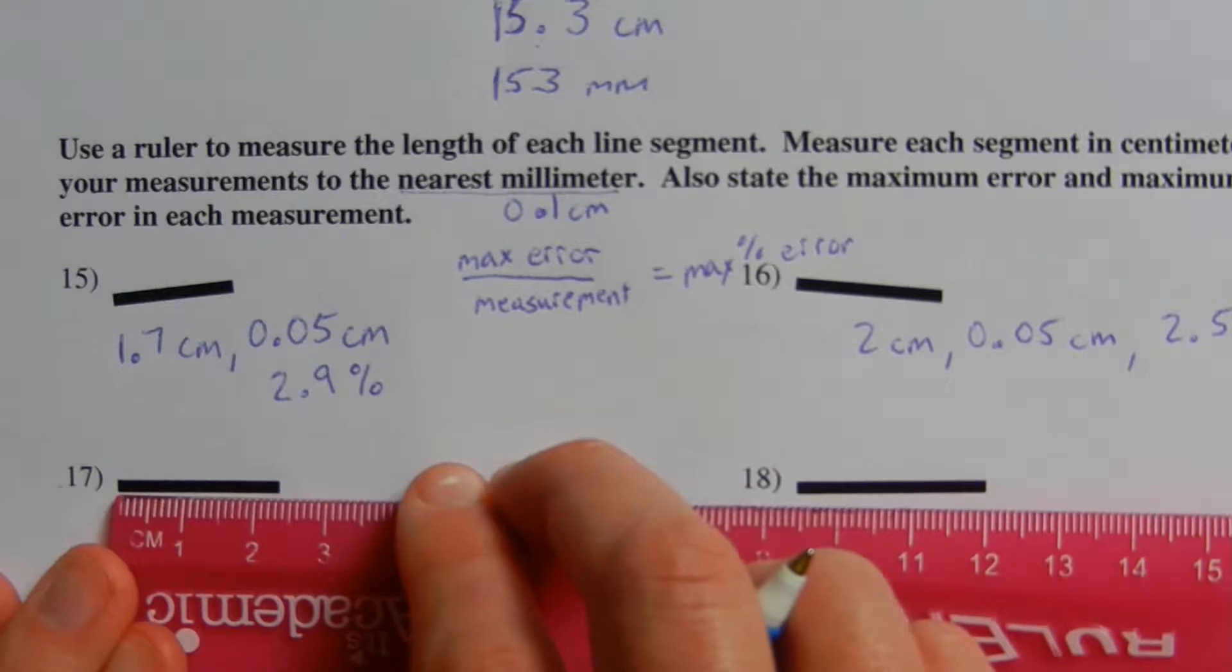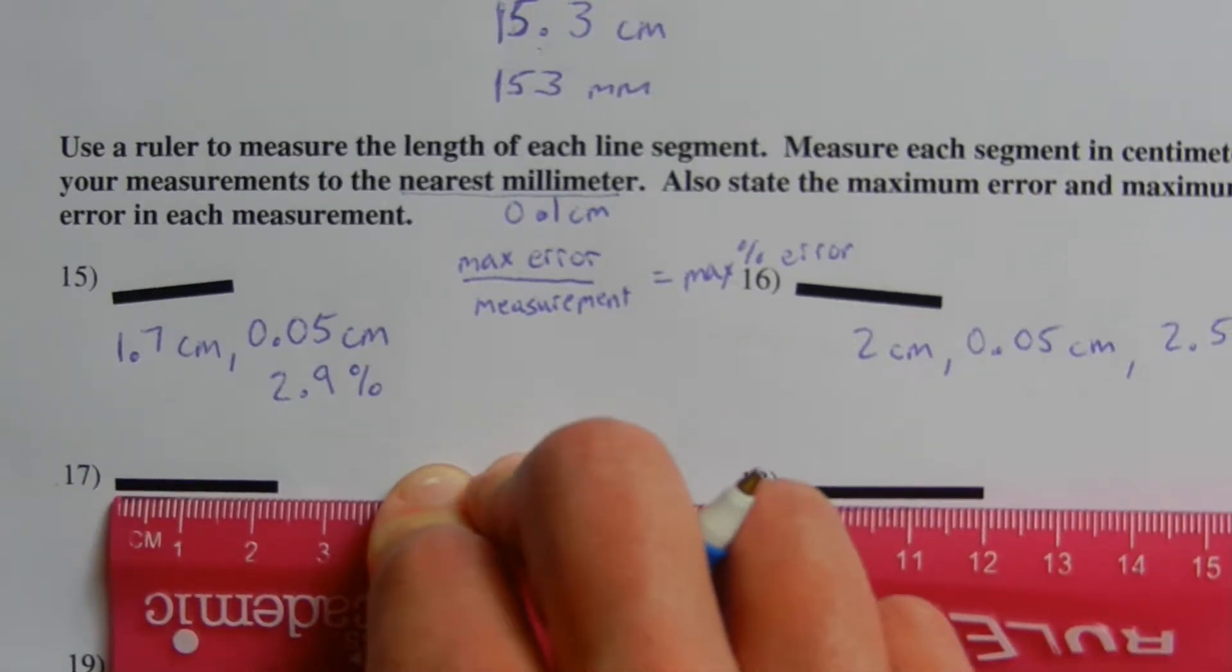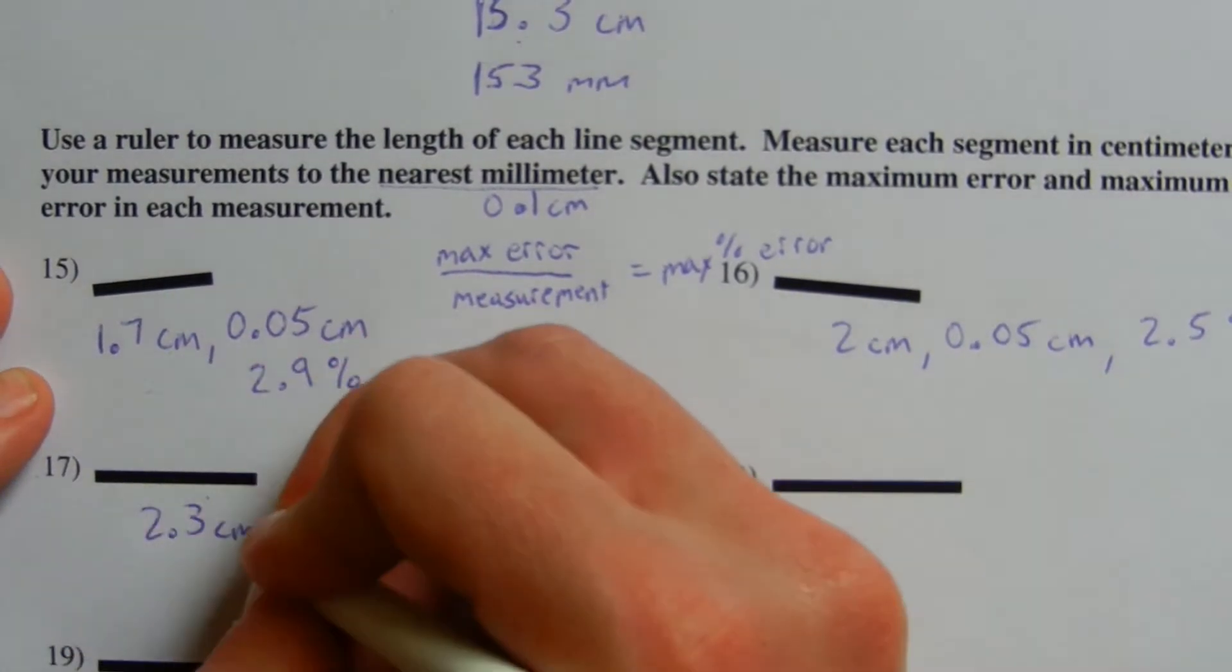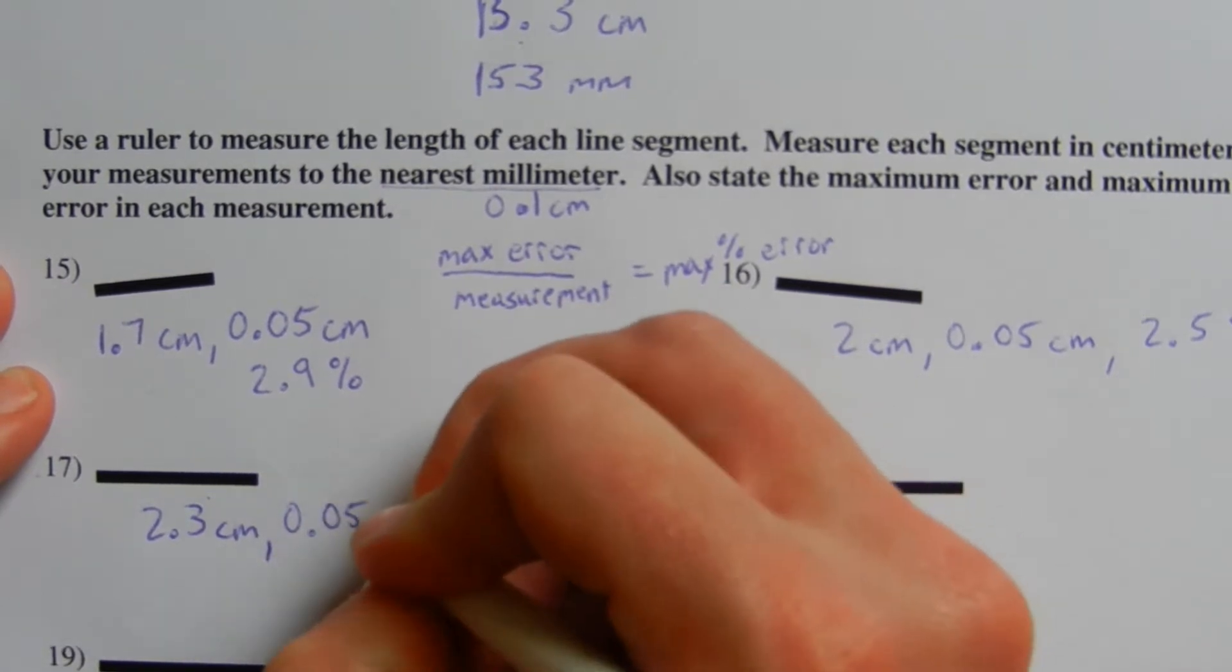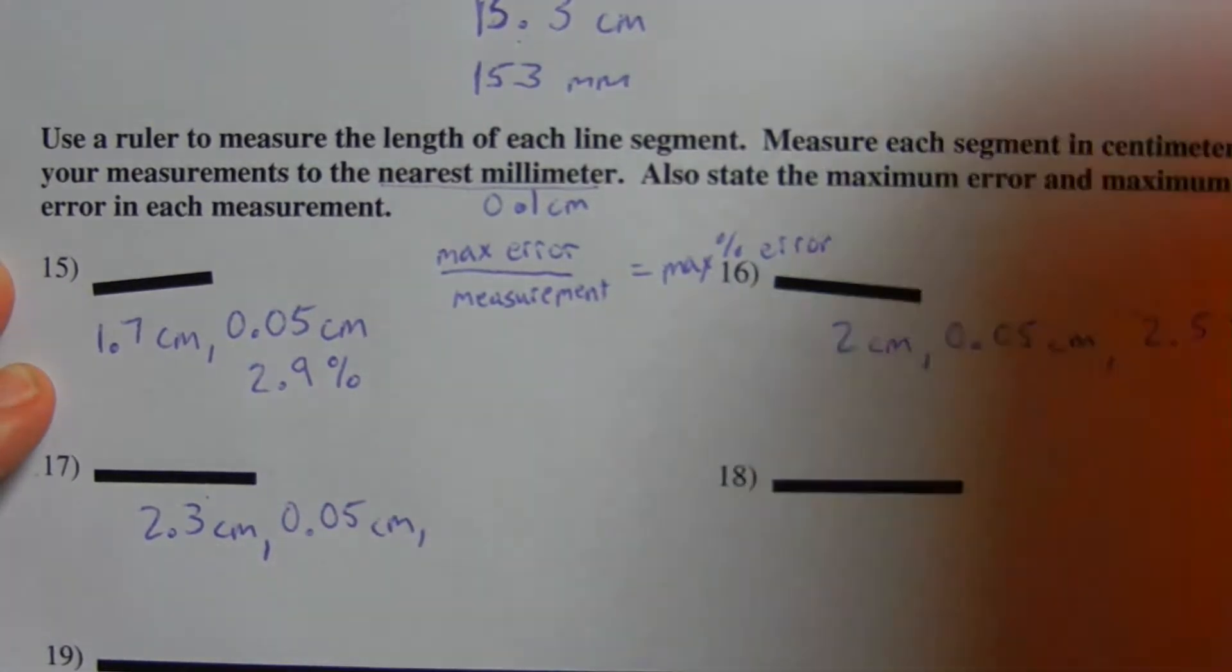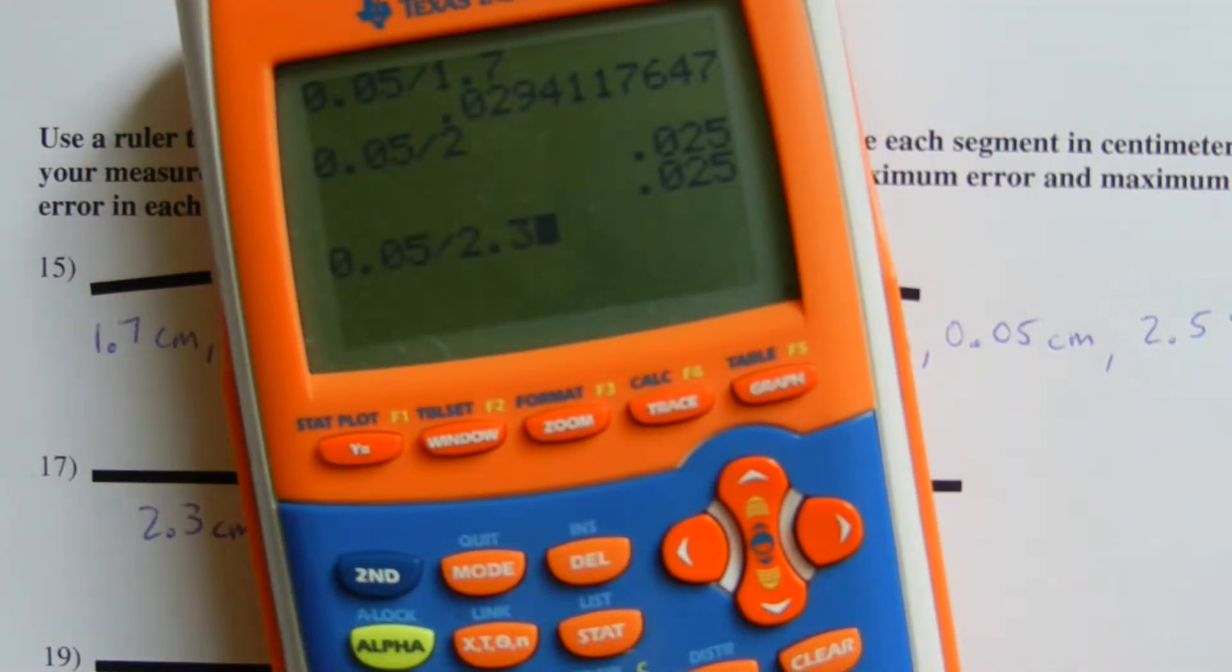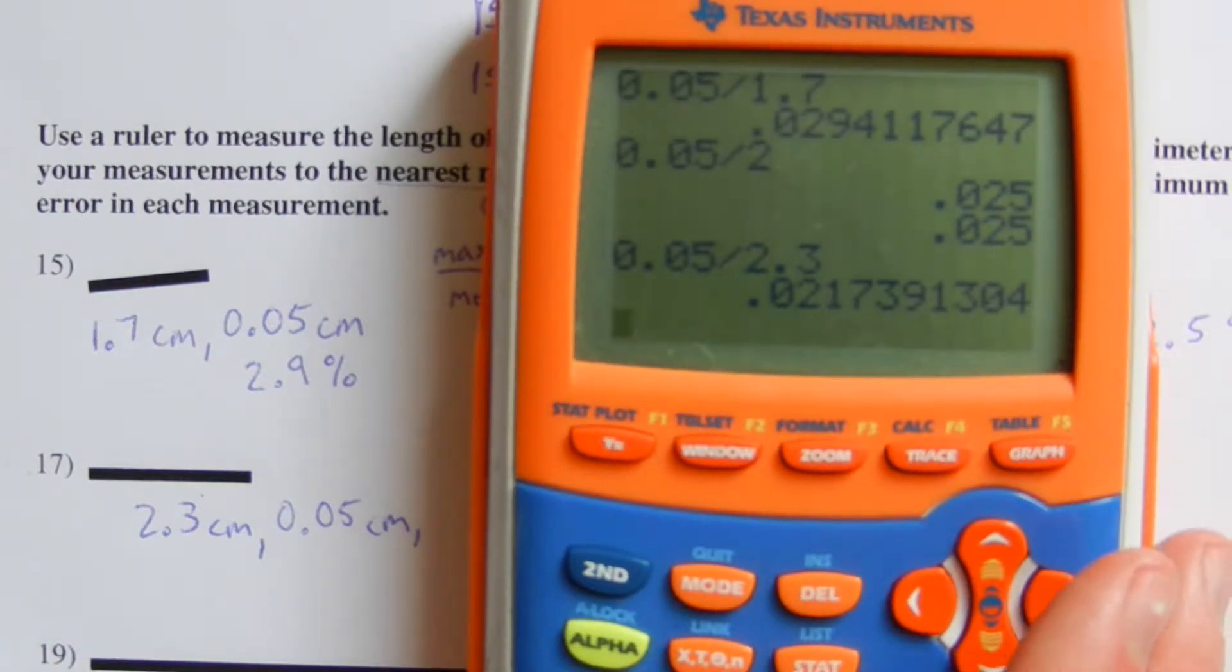Measuring number 17, you can see that we get approximately 2.3 centimeters, since we're going 3 millimeters past the two. Our max error is the same as the previous two, 0.05, and when we divide 0.05 by 2.3, we get 0.0217, which is approximately 2.2%.